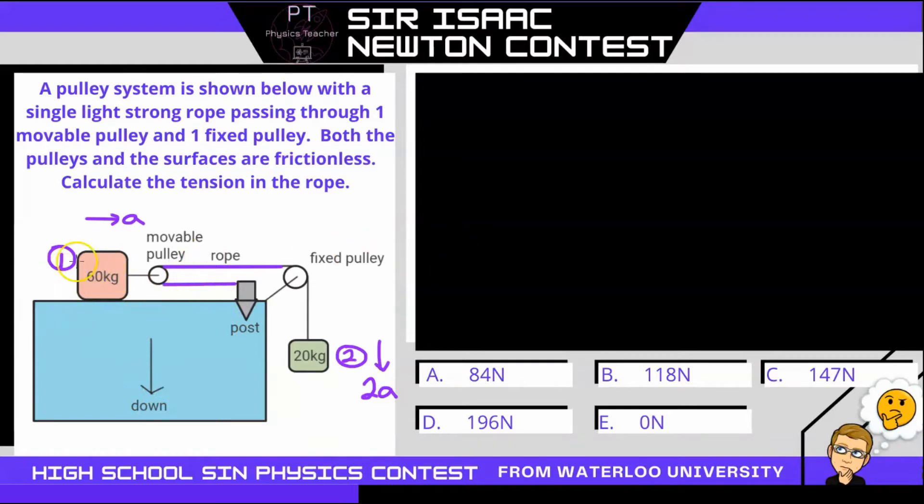So let's look at the free body diagram for block one. Now there's no friction. All we're going to have is two values for tension. So when we apply Newton's second law to the first block, where F net, or the sum of all forces, equals the mass of block one, times its acceleration, well, the sum of all forces is just two tensions. And that's just going to equal the mass, which is 60 kilograms times that acceleration.